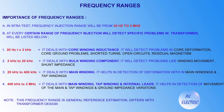Regarding frequency ranges in SFRA test — frequency injection is from 20 Hz to 2 MHz, and each range detects specific problems. 20 Hz to 2 kHz deals with core winding inductance and detects core deformation, core ground problems, shorted turns, open circuits, and residual magnetism. 2 kHz to 20 kHz deals with bulk winding components and detects winding movement and shunt impedance. 20 kHz to 400 kHz deals with the main winding and detects deformation within main and tap windings. 400 kHz to 2 MHz deals with main winding, tap winding, and internal leads, and detects movement of main and tap windings and ground impedance variations. Note: these frequency ranges are general reference estimations only and differ with transformer design.